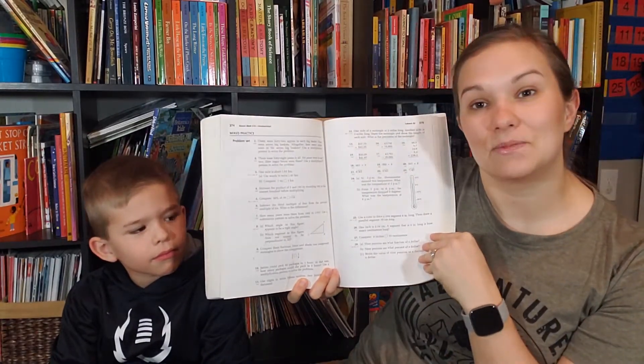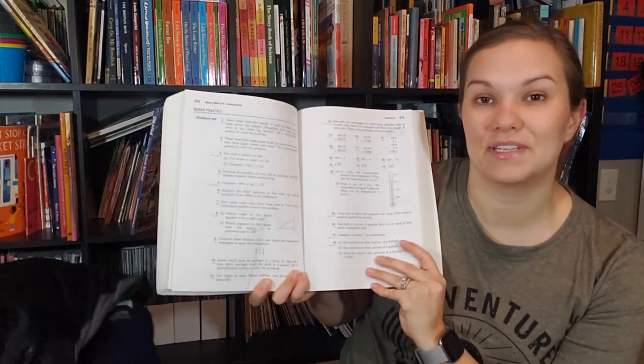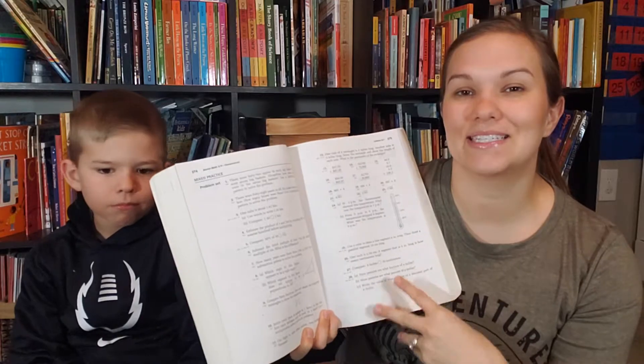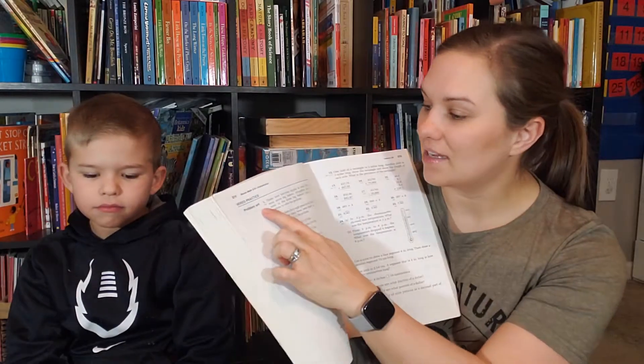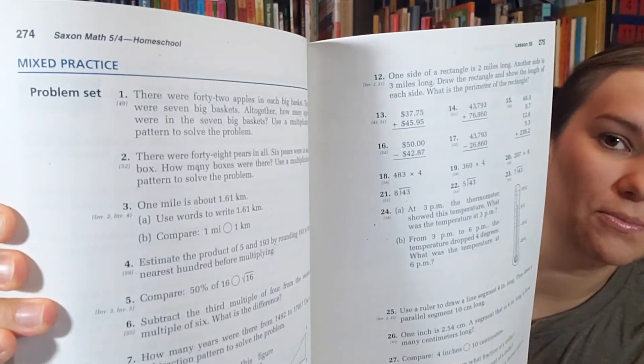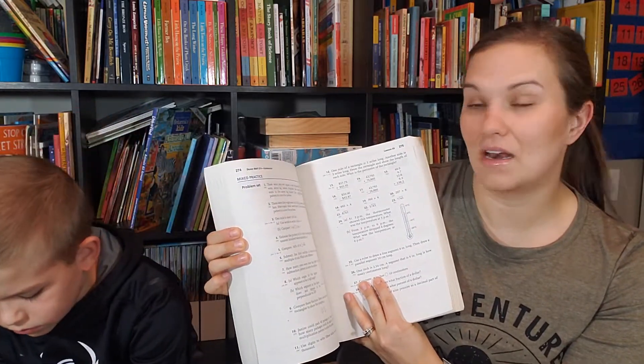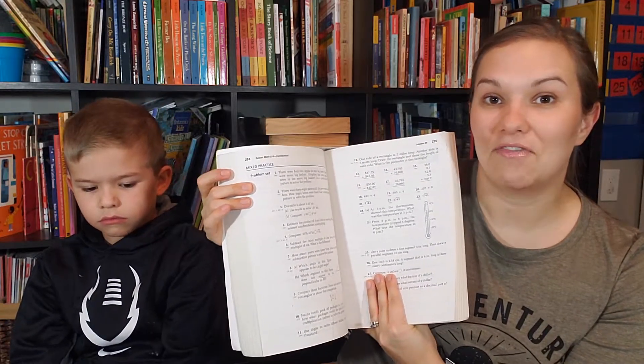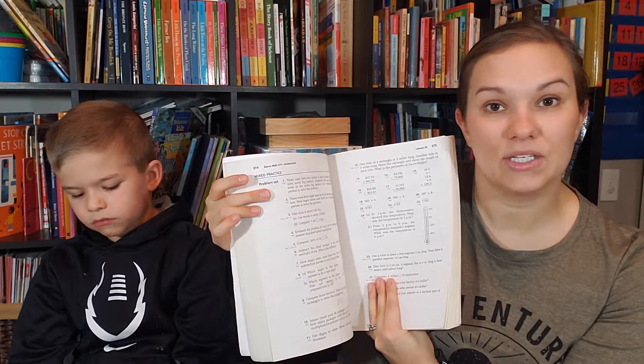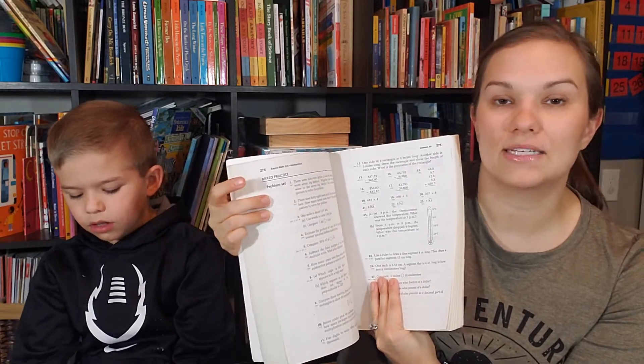So once we go over that lesson practice, then we move to the mixed practice. The mixed practice usually covers about 27-28 problems every day, and it is just like it says - mixed practice - covering a mixture of problems from previous lessons as well as current lessons. And under each problem, there are some numbers in parentheses, and that tells you what lesson that problem relates to. So if your kiddo is looking at number one and they're like, I don't know how to do it, underneath the number one has the number 49 in parentheses, which is telling you that concept was taught in lesson 49.